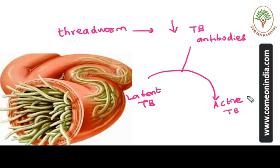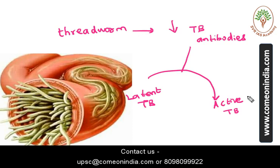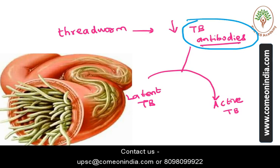Bacteria may be expelled out via exhalation or remain in our body but stay inactive for many years as latent tuberculosis. Latent tuberculosis becomes active when antibodies against tuberculosis are reduced. Threadworm reduces the amount of anti-tubercular antibodies, causing latent tuberculosis to become active. That's why we need to go for deworming treatment.